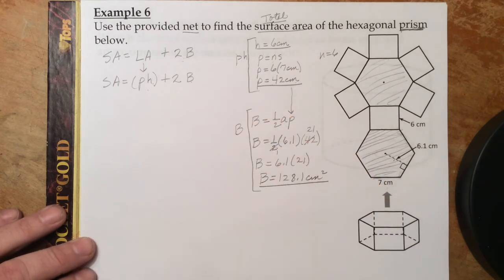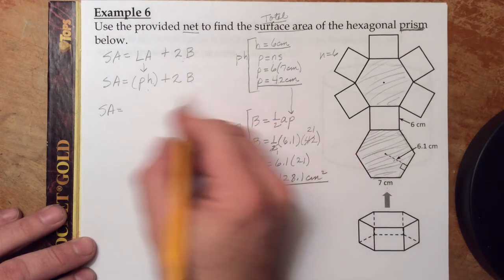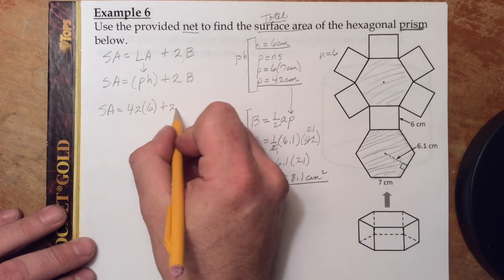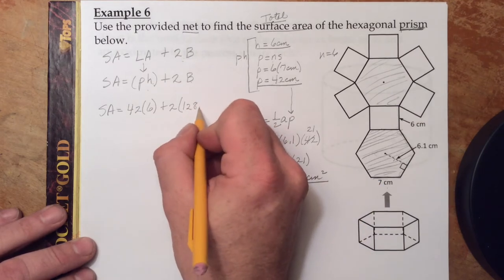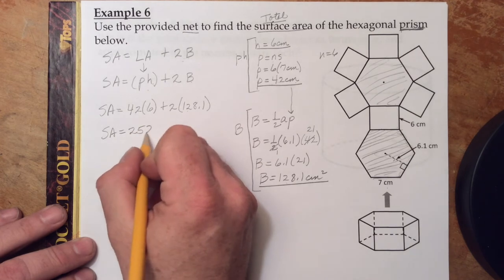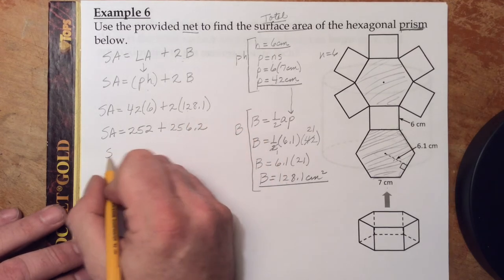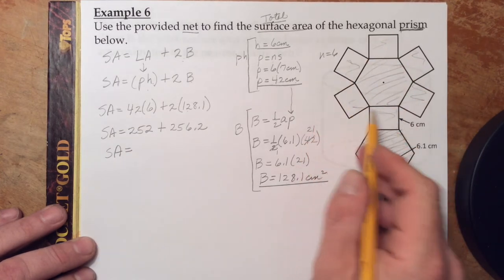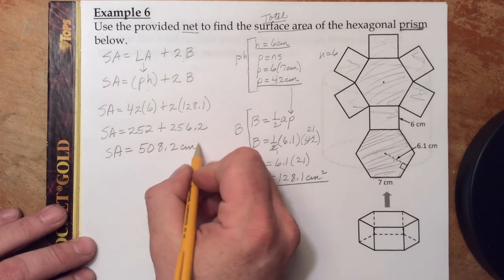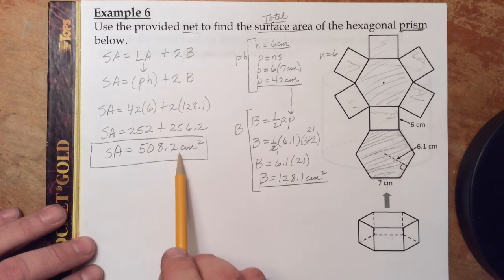Now we have everything. SA = P × H + 2B = 42 × 6 + 2 × 128.1. Using order of operations, multiply first: 252 + 256.2 = 508.2 square centimeters. That's the total surface area of the entire regular hexagonal prism. If you were to wrap this up like a Christmas present with no overlapping, this is how much paper it would take.